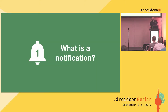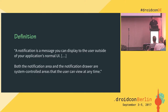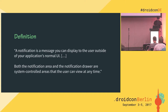Back to the talk. What is a notification? To be very clear, today we are only going to talk about this pixel rectangle that appears in the drawer, and only that. If we look at the definition in the documentation, a notification is a message you can display to the user outside of your application's normal UI. Both the notification area and the notification drawer are system-controlled areas that the user can view at any time. I want to focus on two main points: outside of your application, and can view at any time. That's really where a notification brings the most value.